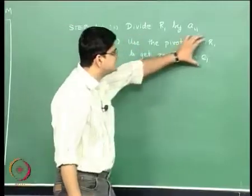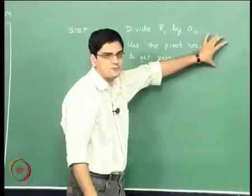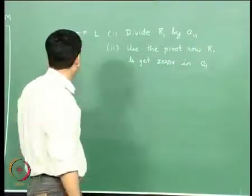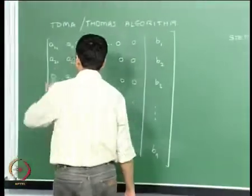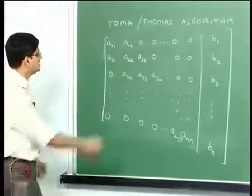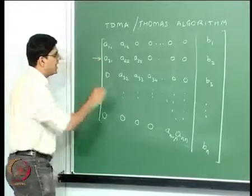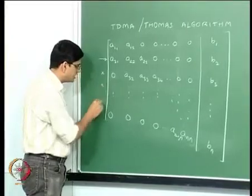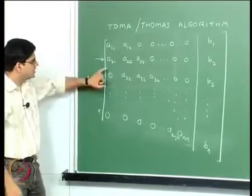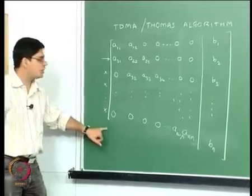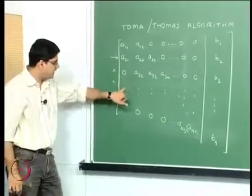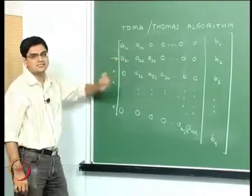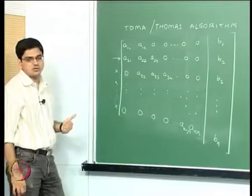This was the second part of Step 1 in Gauss elimination. Now let us look at what kind of structure we have in the tri-diagonal matrix. In the tri-diagonal matrix, row 2 has a non-zero element, but row 3, row 4, up to row n do not have non-zero elements in column 1 below the diagonal. Only row 2 has a non-zero element.